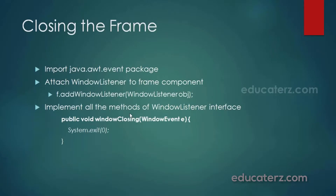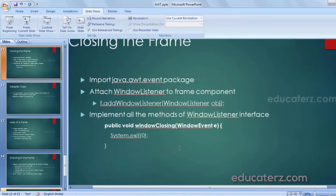For closing a window we need to implement the windowClosing method. Since I want to terminate from the application as soon as I click the close button, I simply call System.exit(0). So when the frame is closed, the body of this method executes and the application gets closed. This is how we can handle the frame closing event.